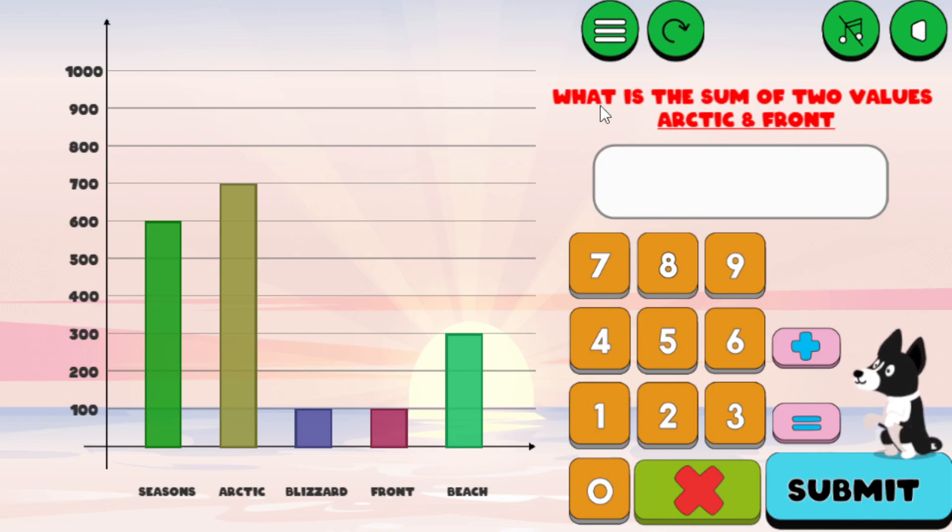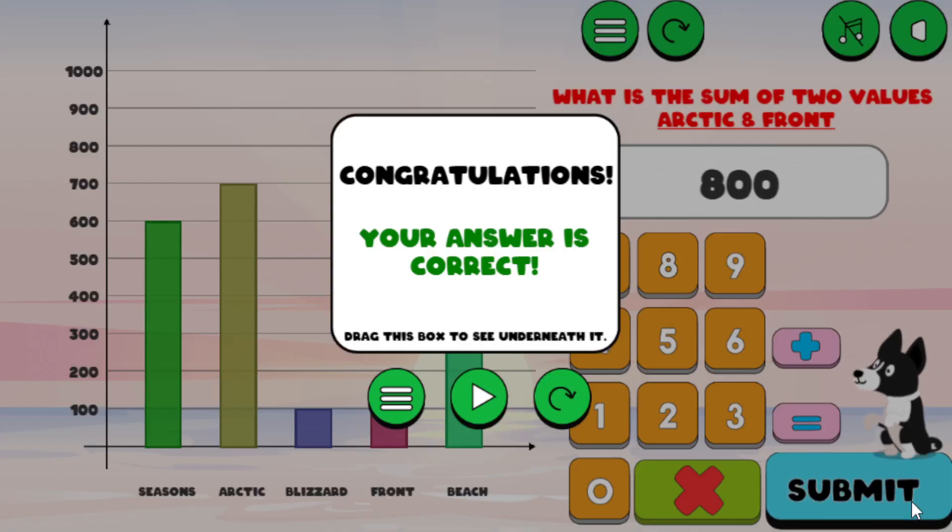So the object is to go ahead and answer this question here, and you use information on the bar graph. So it says, what is the sum of the two values, Arctic and front? So you see Arctic here, and front, and you're saying, okay, that's 700 plus 100 would be 800. You can go ahead and type that in, or if you don't want to, you can get rid of it. But let's go ahead and type it in and hit Submit.